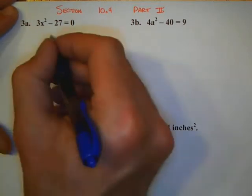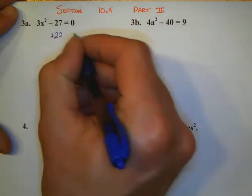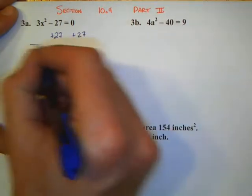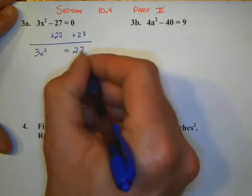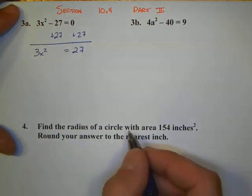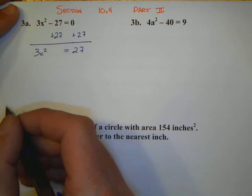We're going to add 27 to both sides because that's the first step in trying to isolate that 3x squared. Now that 3x squared is by itself, we have 3x squared equals 27. We now want to get the x squared by itself.